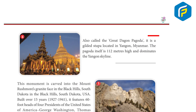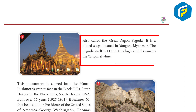Number four, also called the Great Dragon Pagoda: it is a gilded stupa located in Yangon, Myanmar. The pagoda itself is 112 meters high and dominates the Yangon skyline.